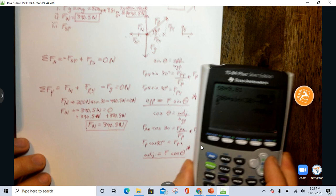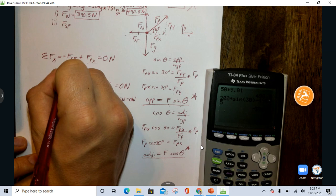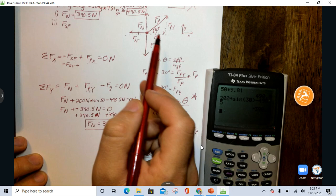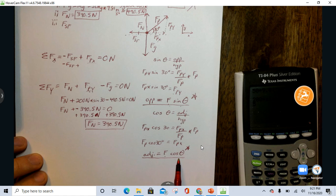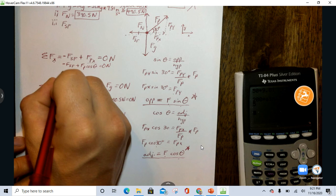And then, finally, for the force of static friction, we're looking in this direction now. So, I know I've got this negative force of static friction, plus FPX, which is the adjacent side. So, if it's the adjacent side, it's the force times the cosine of the angle. In this case, it's the pull force times cosine 30. So, I'll write that out. Angle, zero newtons.